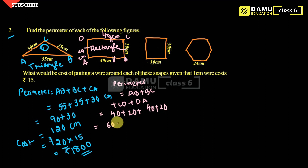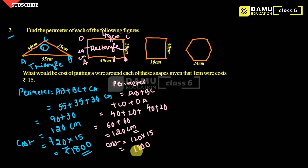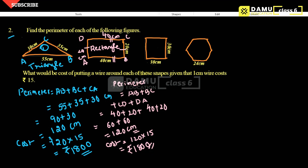So 40 plus 20 is 60, and the other two sides give another 60, totaling 120 centimeters. The cost for the wire will be 120 into 15 rupees per centimeter, which gives 1800 rupees for the rectangle as well.